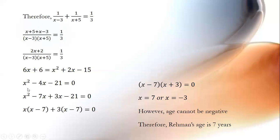We can split the middle term as minus 7x and plus 3x. Solving, we get x equals 7 or x equals minus 3. But age cannot be negative. Therefore Rahman's present age is 7 years.